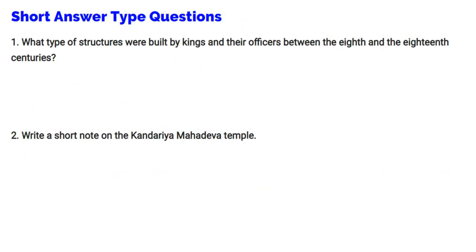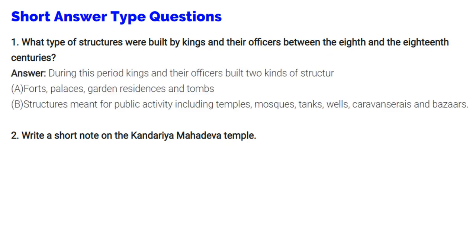Between the 8th and 18th centuries, kings and their officers built two kinds of structures: first, forts, palaces, garden residences, and towns; and second, structures meant for public activity like temples, mosques, tanks, wells, caravanserais, and bazaars.